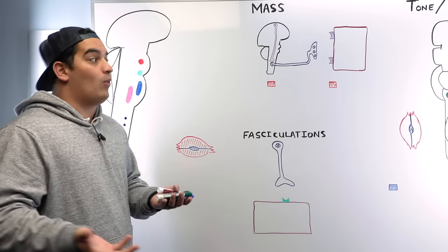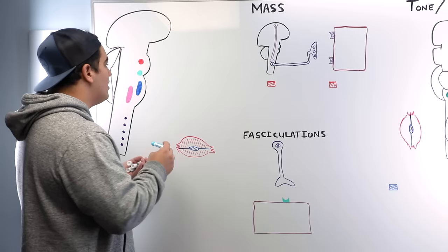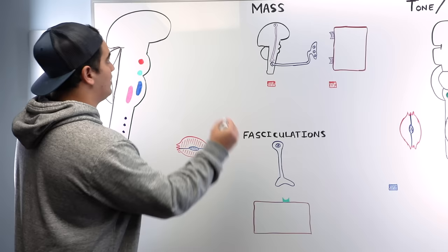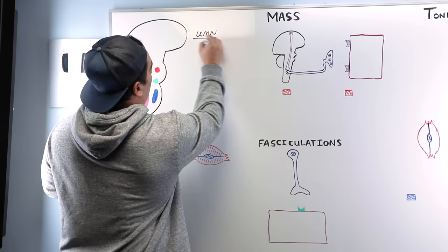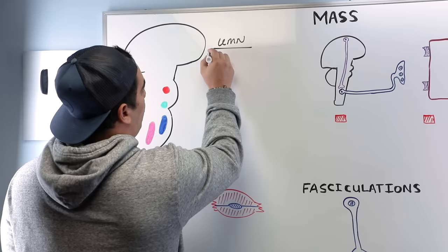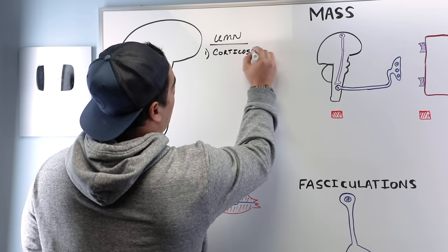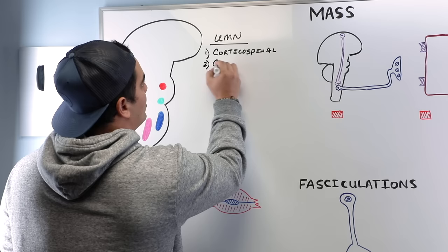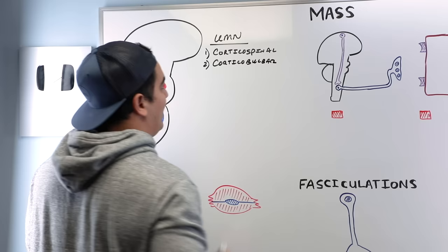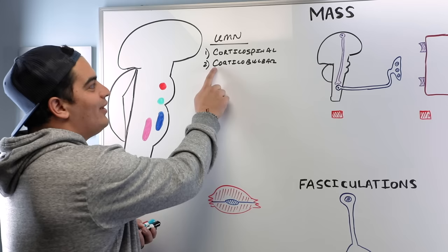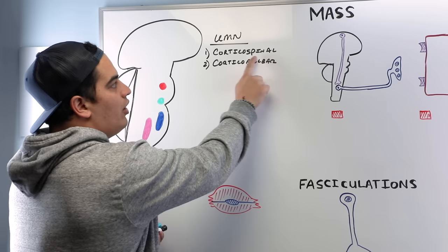There are two types of upper motor neurons, corresponding to two tracts or pathways. The first is called the corticospinal tract, and the second is called the corticobulbar tract. The name tells you where each starts: 'cortico' meaning cortex. Corticospinal goes from the cortex to the spinal cord; corticobulbar goes from the cortex to the bulb of the brainstem.